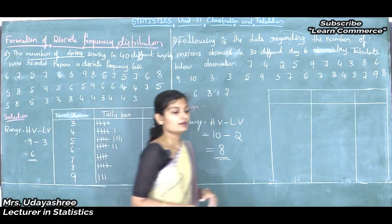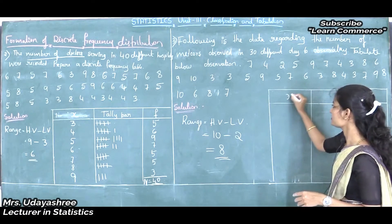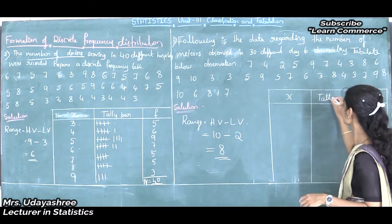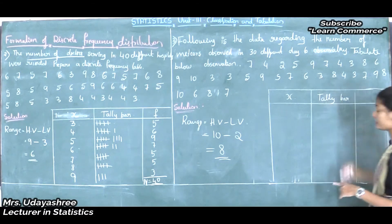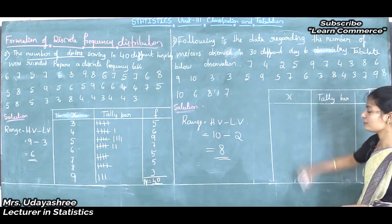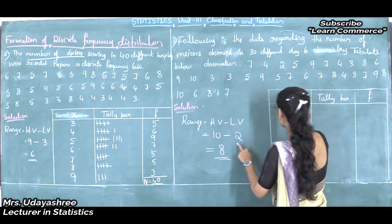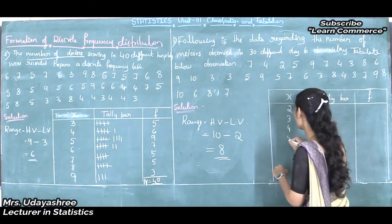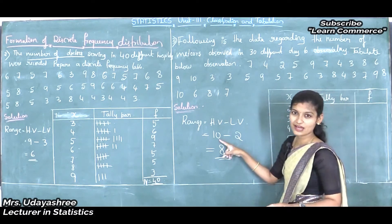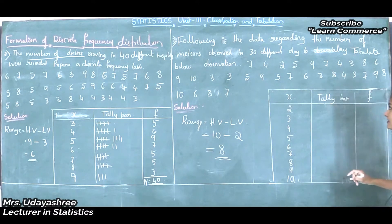How to format discrete frequency distribution? The first column is variable, denoted by X, so I will write X. Next is the tally bar. The last column is frequency, denoted by small letter F. The lowest value is 2, so I will start with 2: 2, 3, 4, 5, 6, 7, 8, 9. The highest value is 10, so I will end with 10.